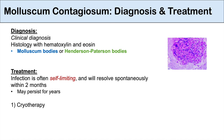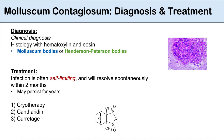Some of the treatments include cryotherapy, which is one of the first-line treatments — essentially applying liquid nitrogen to the papules to destroy the molluscum contagiosum virus. Other treatments include cantharidin, curettage (scraping off the papules), and imiquimod, which is an immunomodulator that induces the immune system to destroy the virus. Topical retinoids can also be used for treatment of molluscum contagiosum.